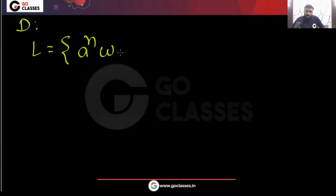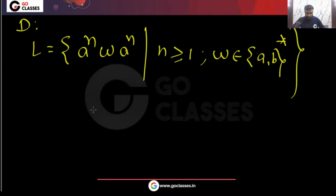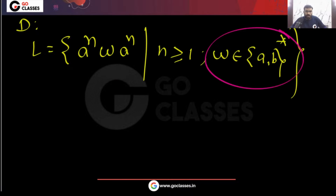The language is L = a^n w a^n, where n ≥ 1 and w belongs to {a, b}*. This is the question given to you — can you say L is not regular?